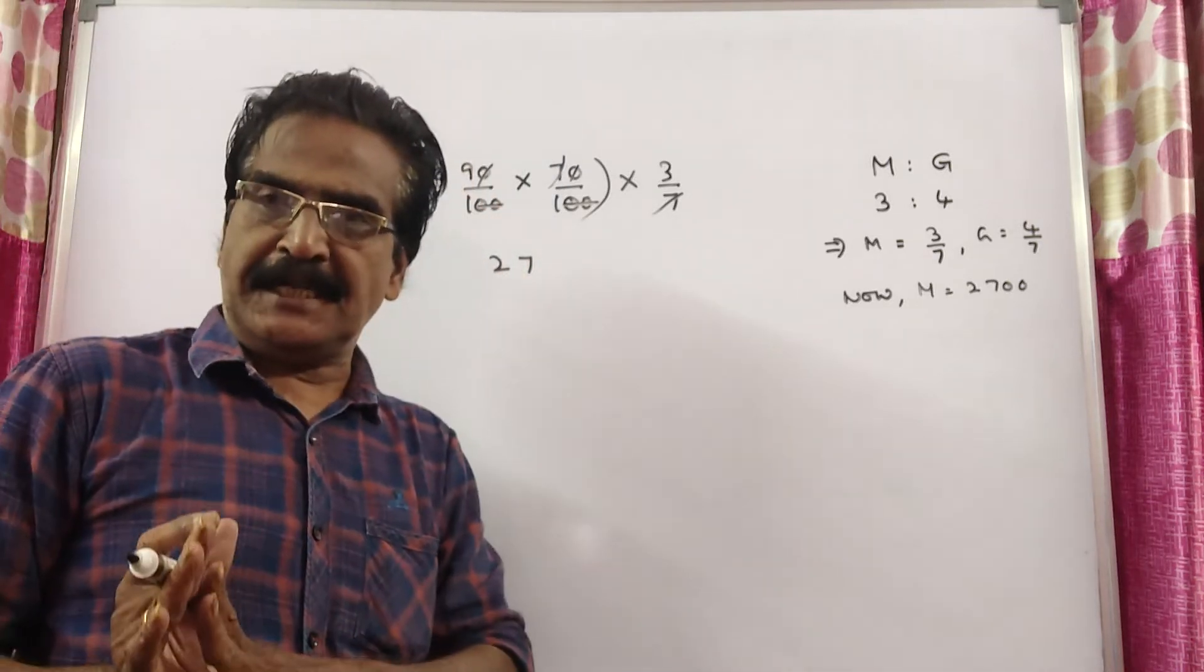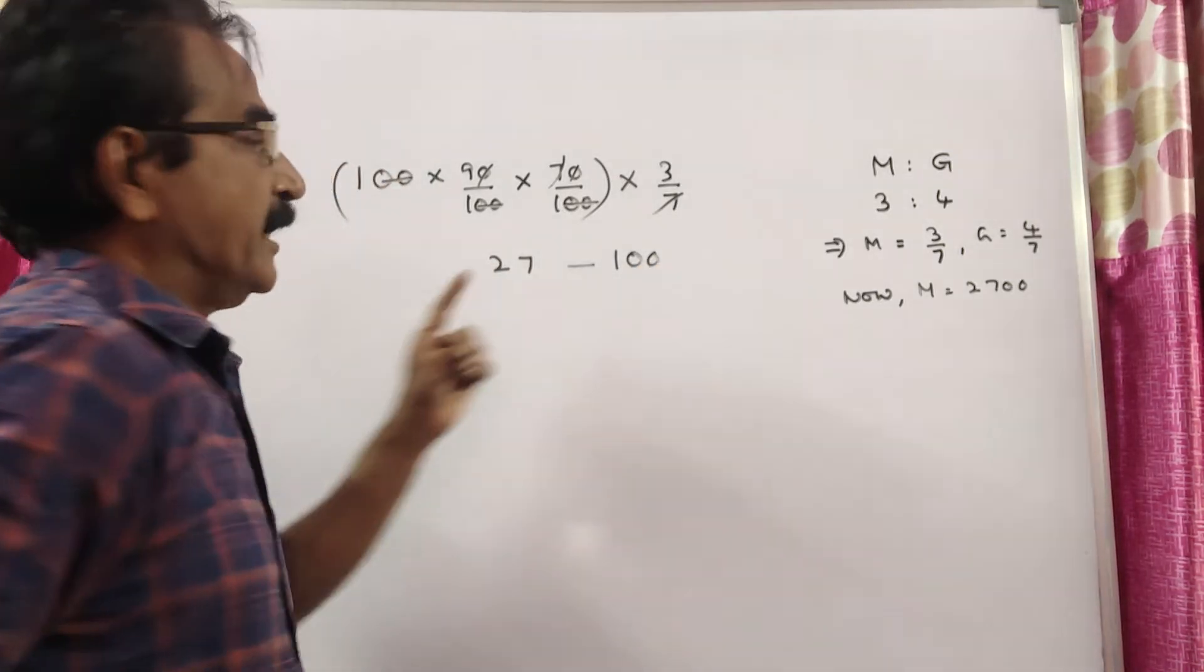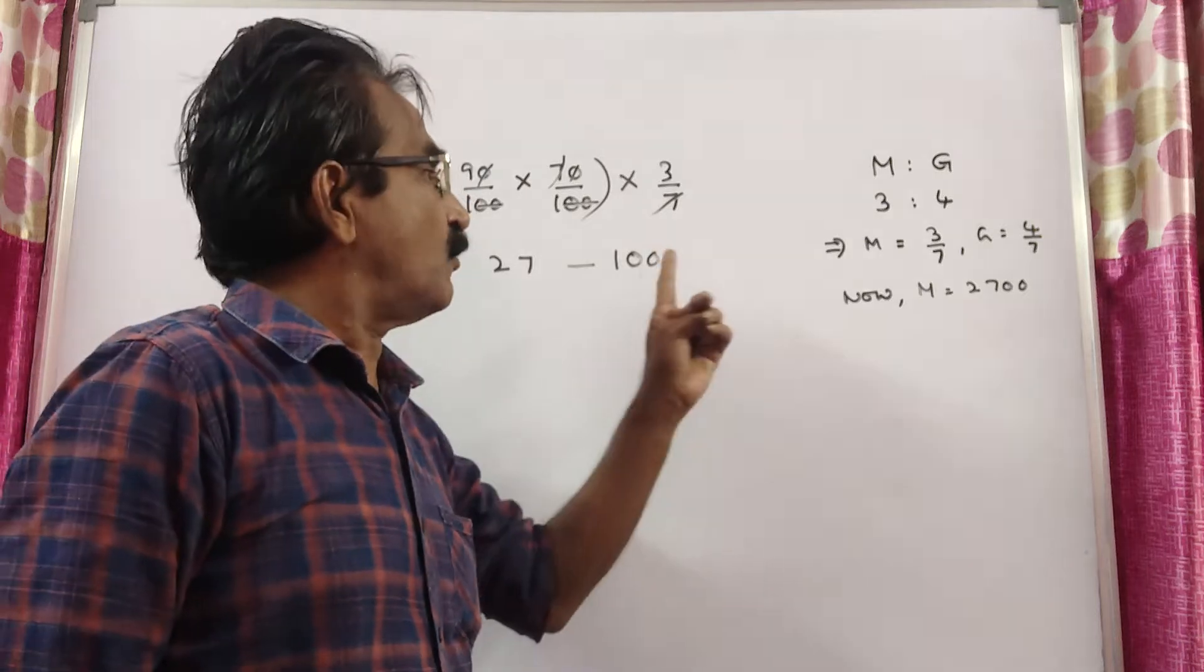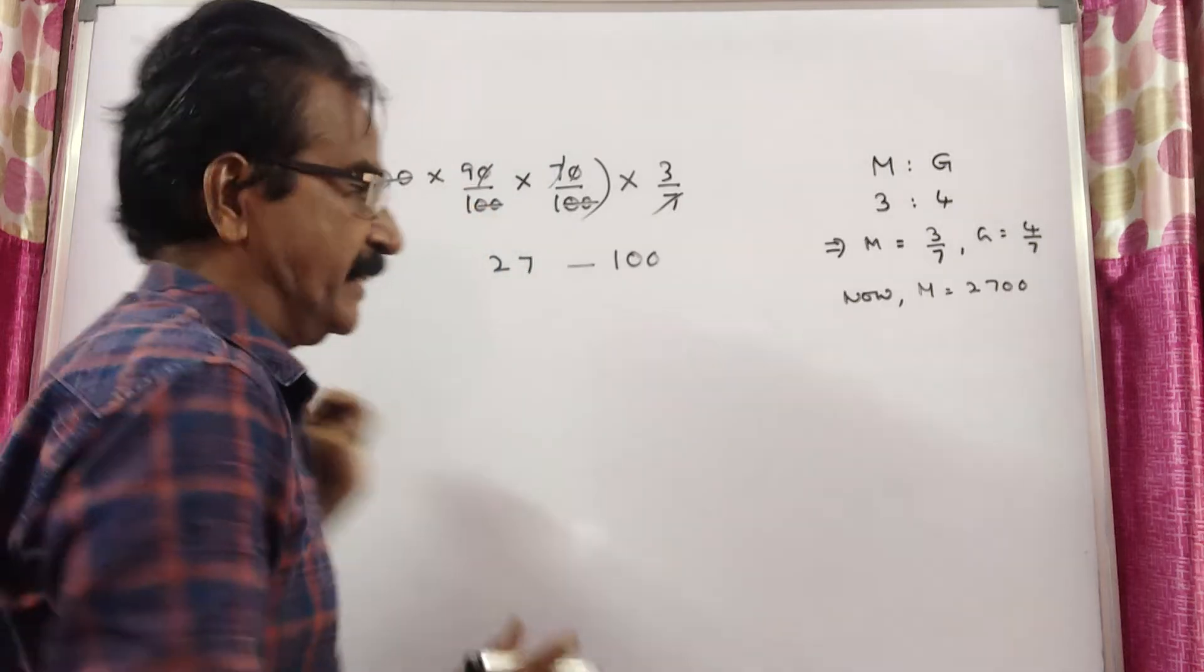If the expenditure on medicine is 27, then the total salary is 100. But what is given? The expenditure on medicine is 2700.